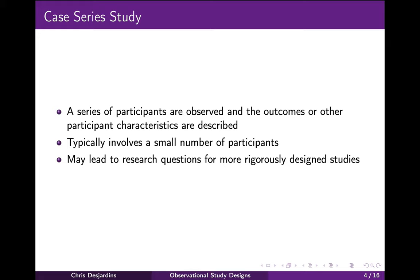A case series study is an observational study in which a series of participants are observed and the course of their disease or other participant characteristics and outcomes are described. It is similar to a report on a single case, but it describes more than one related case. Case series studies typically involve a small number of participants. There is no comparison group and no sampling. Case series studies are purely descriptive — no information about the association between exposure and outcome can be obtained, and no inference can be made to a larger population. These studies are typically not planned in advance, but arise due to a researcher or doctor noticing something unusual or unexpected.